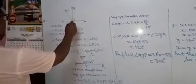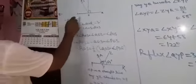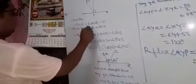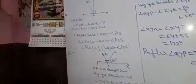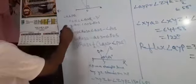Here in the figure, POQ is a line, R is perpendicular, and OS is another ray. Since OR is perpendicular to PQ, angle POR is equal to angle QOR, which is equal to 90 degrees. Why? Because perpendicular means a 90-degree angle. POR forms two angles.